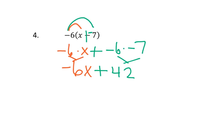So then I look here and say, can I add negative 6x plus 42? Do they have like terms? Well, no, because the first one has an x and the second one doesn't. So my final answer is negative 6x plus 42.